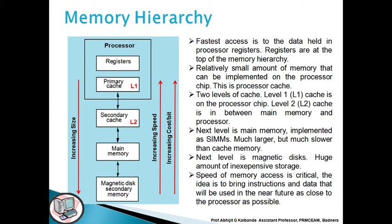Two levels of cache are found here. The primary cache comes in at level 1 of the processor chip, and the secondary cache is at level 2, which sits between the main memory and the processor. The next level is main memory, implemented as SIMMs — it is much larger but much slower than cache memory.